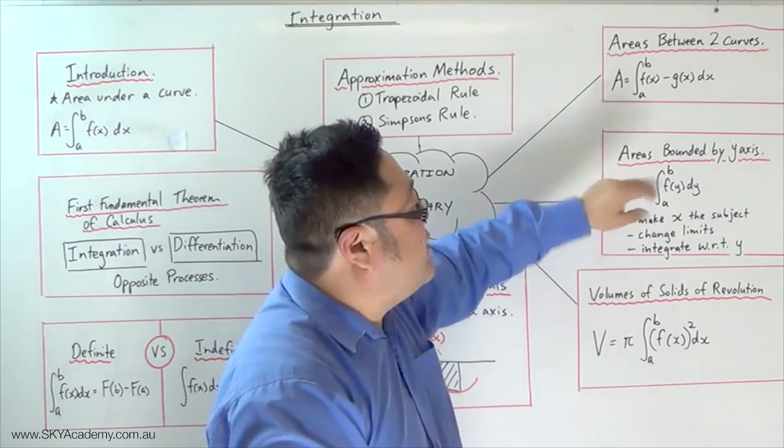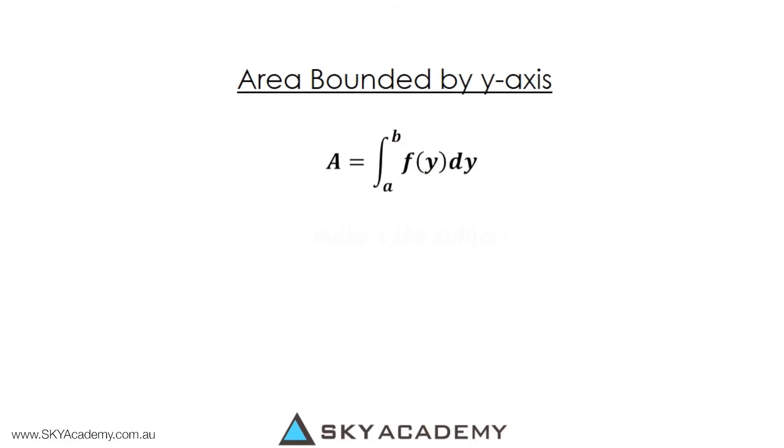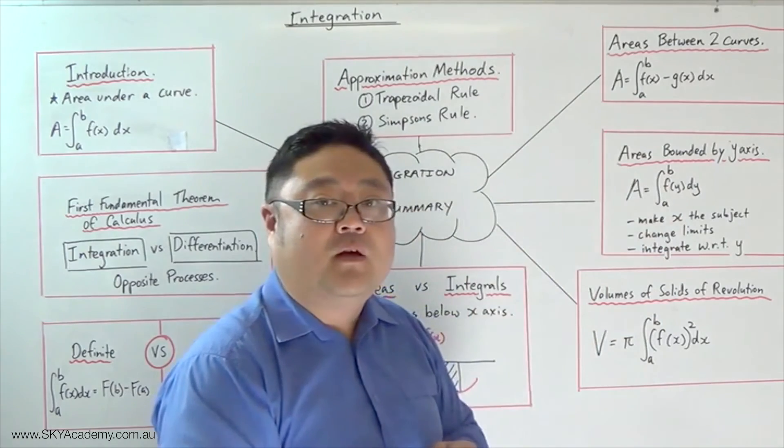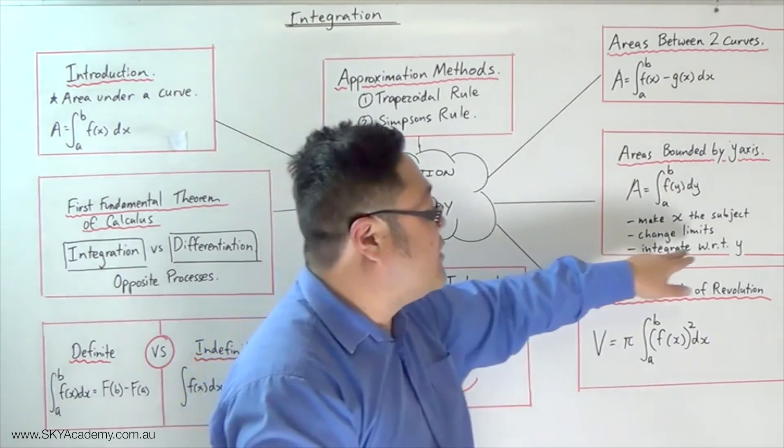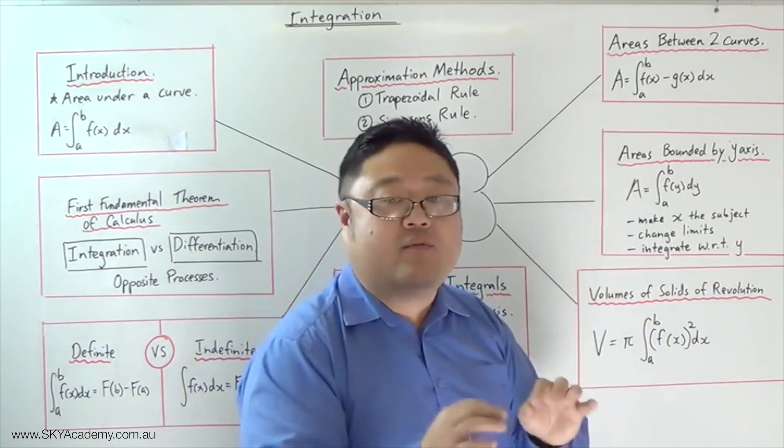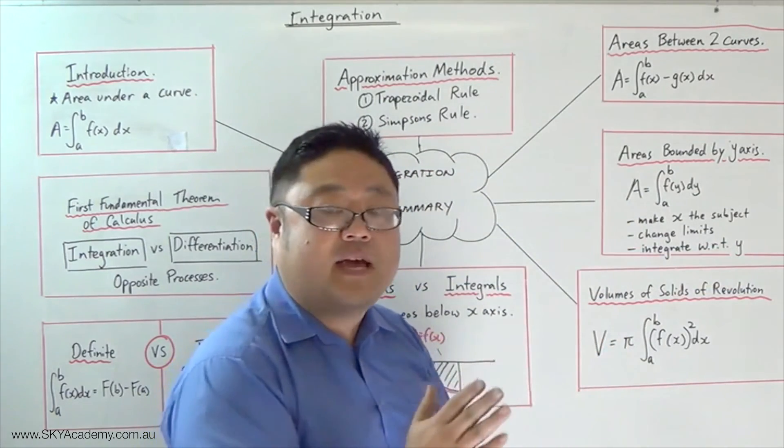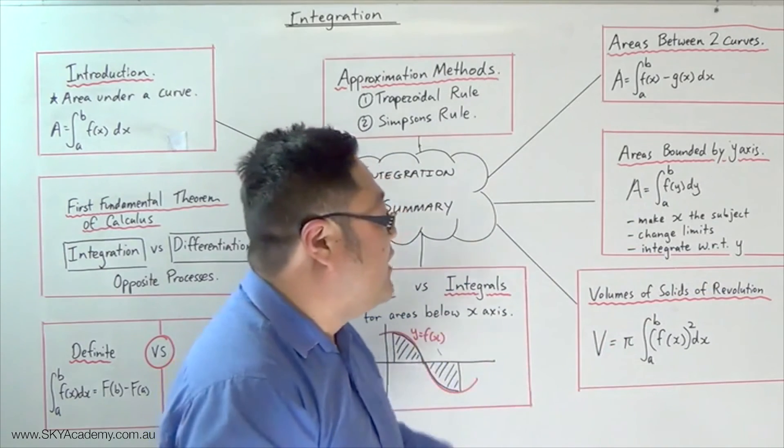Then we looked at areas bounded by the y-axis. For that, we need to make x the subject and express x in terms of y. Change the limits so that they're reflected, so that the limits are the y-coordinates, a and b, of the limits of the integral. Then integrate with respect to y instead of with respect to x. That will give you the area bounded by the y-axis as opposed to the x-axis.